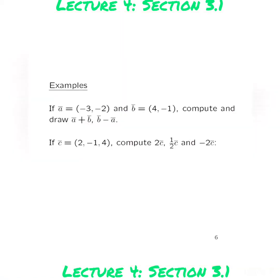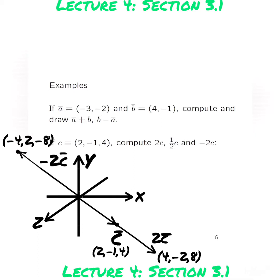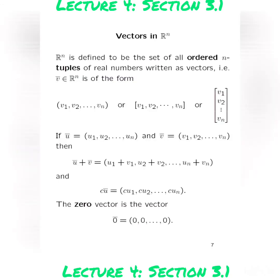Next we have example 2. Take the vector C and draw it in 3-space on the XYZ axis. There's C; take twice C by multiplying each component by 2. Negative 2C points in the opposite direction — multiply each component by minus 2. And there we have half of C.